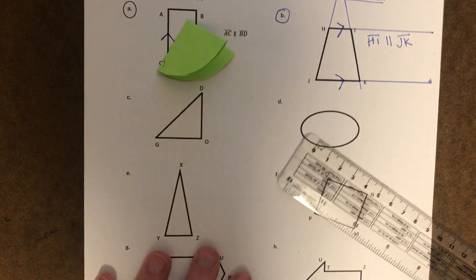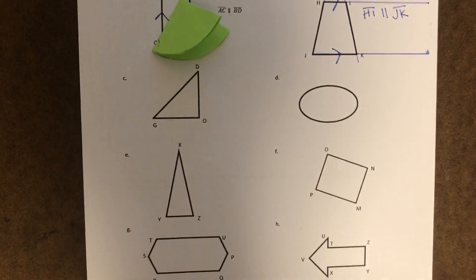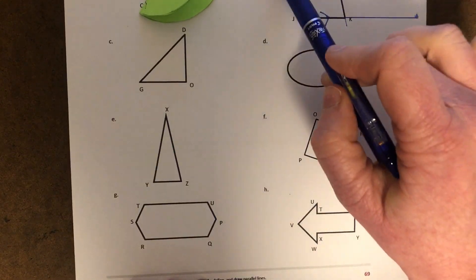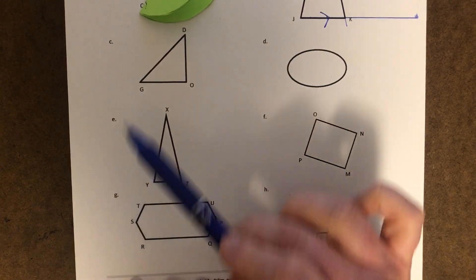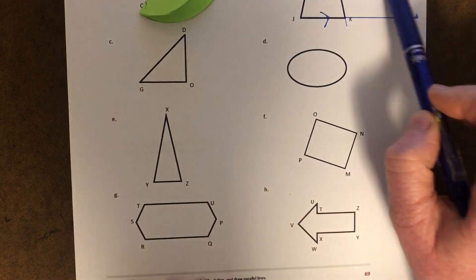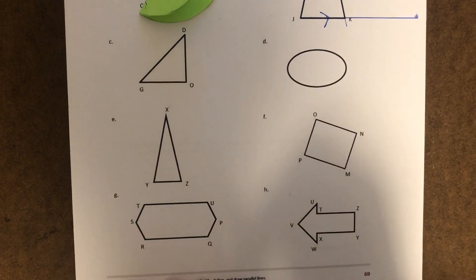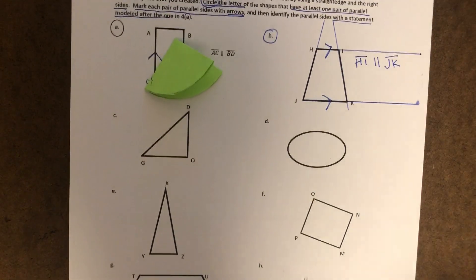All right. Can you do that on the rest of them? Can you find any parallel lines in the rest of the figures? Circle the letter that has parallel lines, at least one pair, and then name it with the statement if it has them. All right. Good luck.